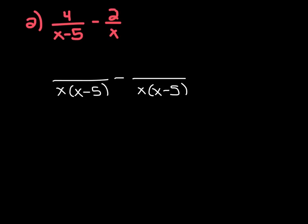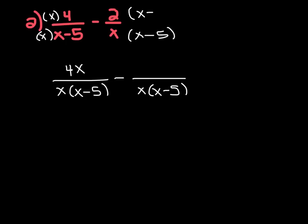In order to get our first denominator to look like the common denominator, we would have to multiply it by x. And if we do that on the bottom, we also have to do that on the top. So 4 times x is 4x. And then the second denominator — we're going to have to multiply this by x minus 5. Whatever we do in the denominator, we have to also do in the numerator. So let's distribute: we have 2x and then minus 10.